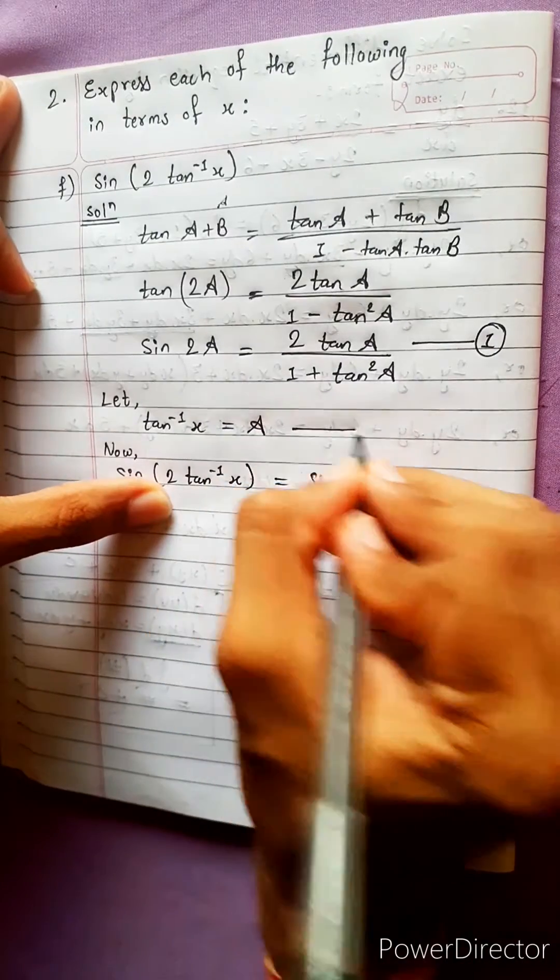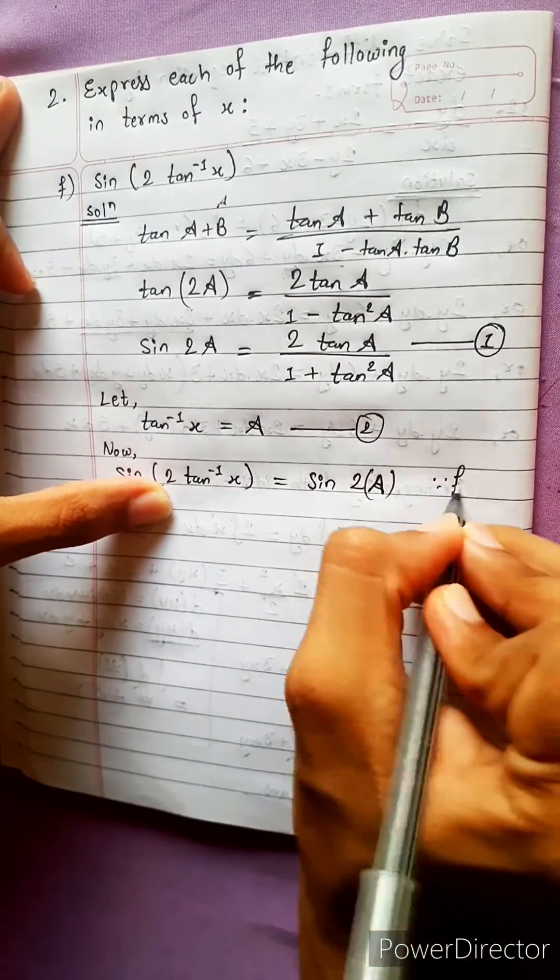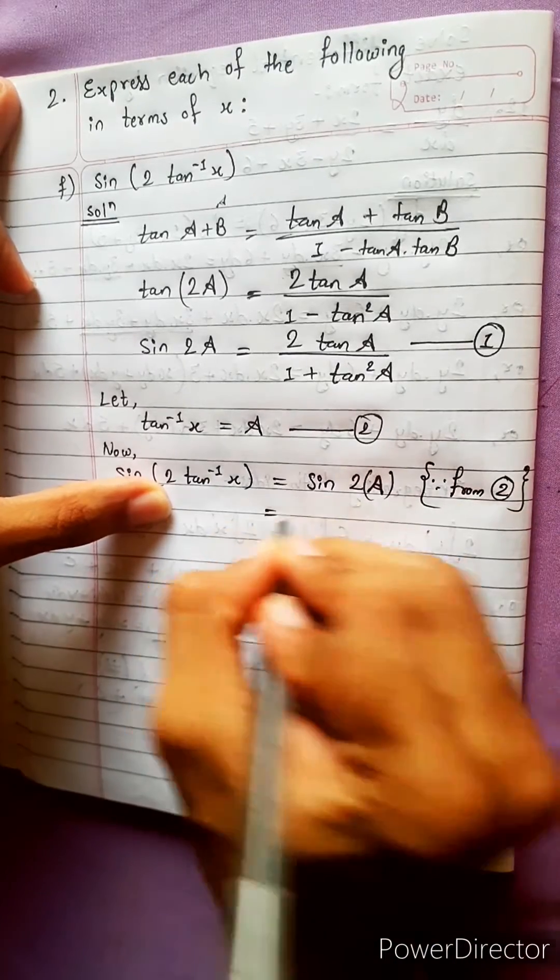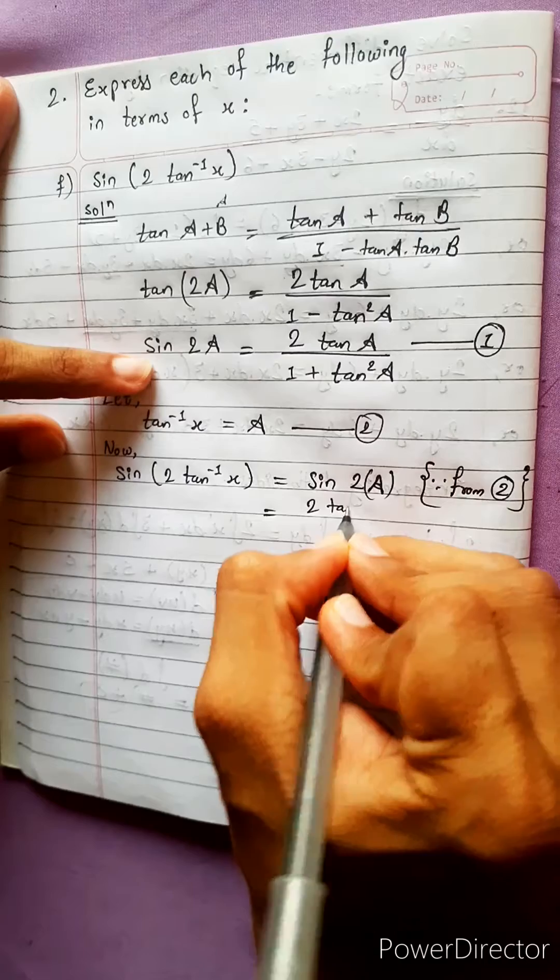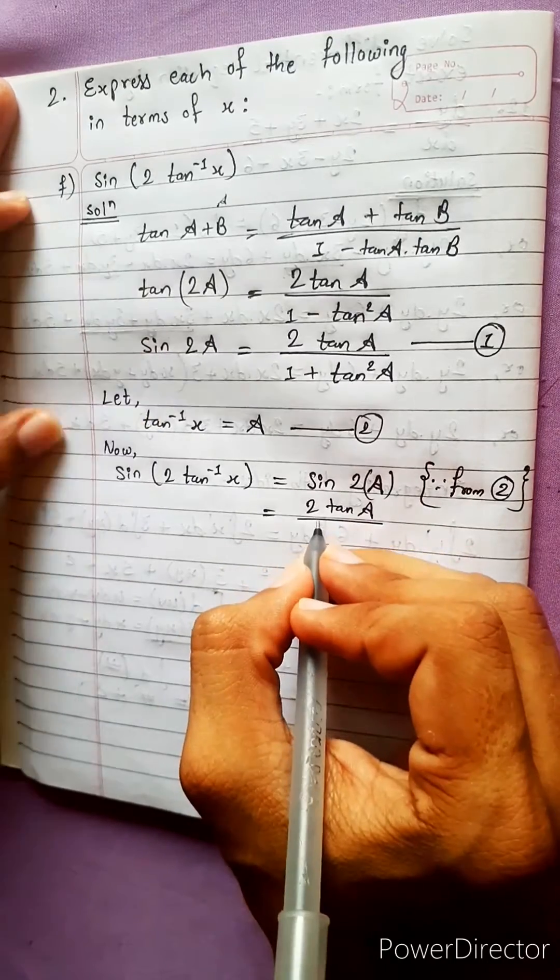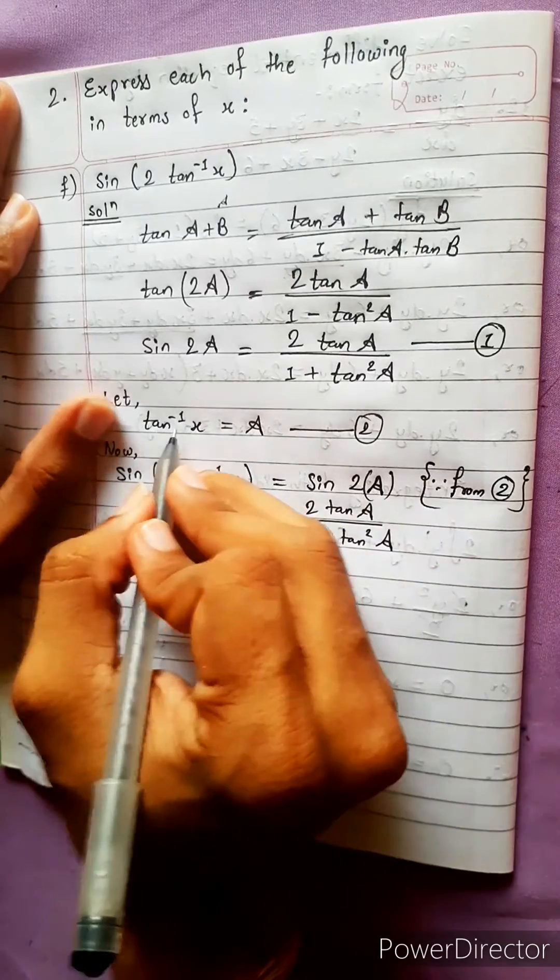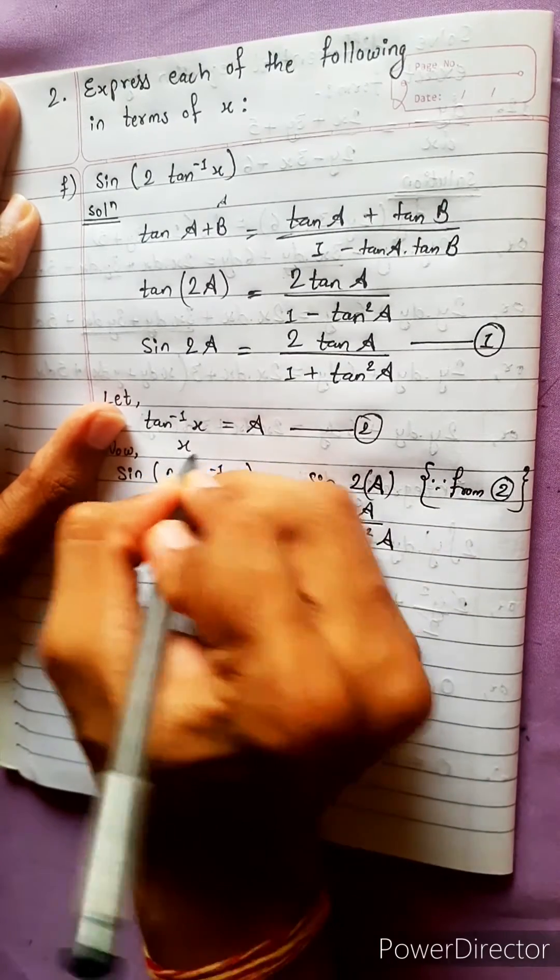Because tan inverse x equals to A, we got this from equation 2. Now sin(2A) is how much? 2 tan A upon 1 plus tan square A.